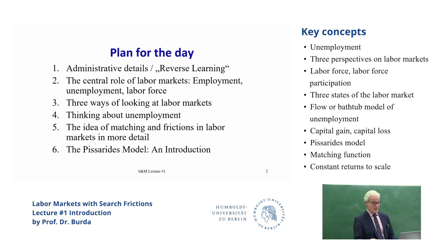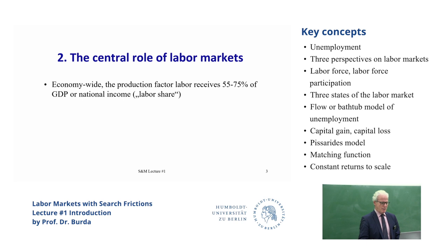The Pissarides model is the bottom line. Labor is really important—it's a production factor that goes into the generation of GDP. Without labor, not much happens. You don't have firms consisting completely of robots; there's usually at least one person running the show, usually a lot more people. The remuneration, the payment to labor, is a huge chunk of GDP.